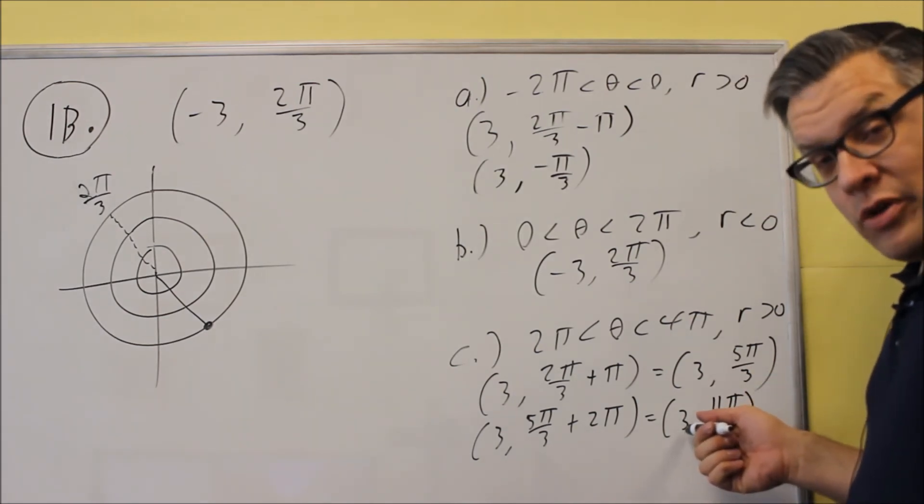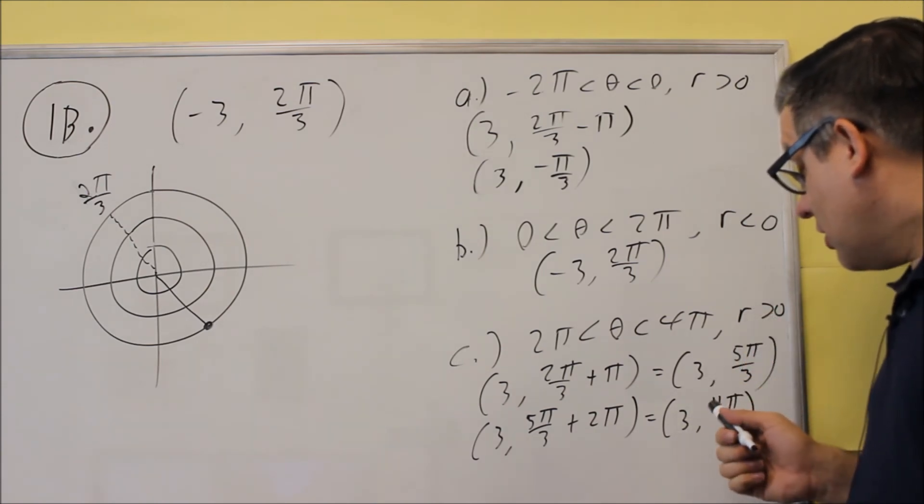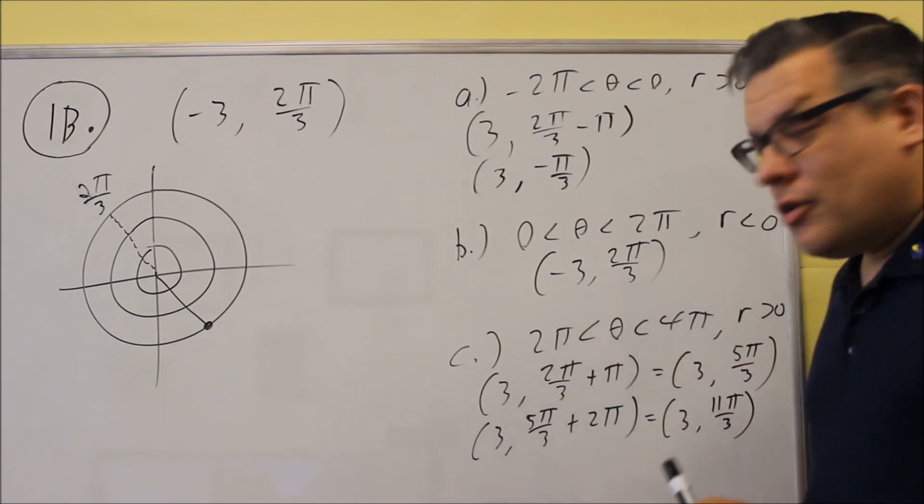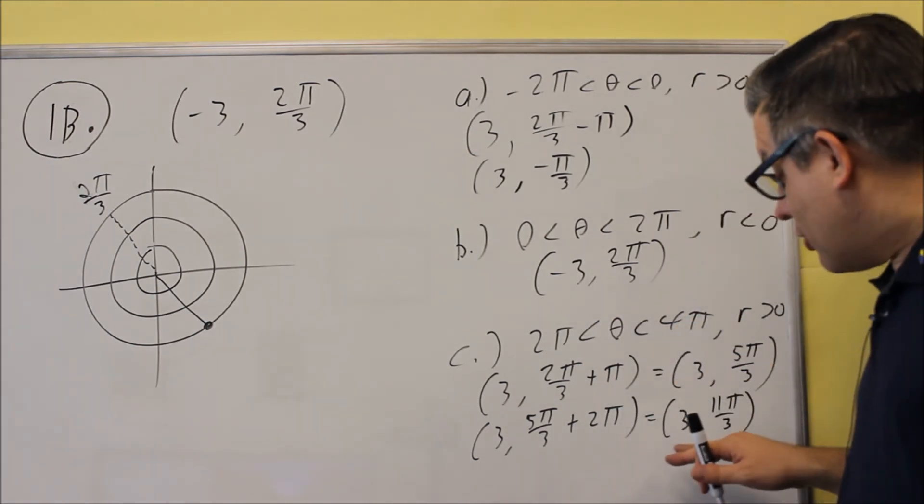My r is 3 greater than 0, and the fraction 11 thirds would be between 2 and 4, and so it does meet our conditions here.